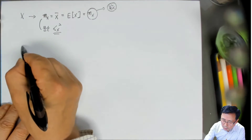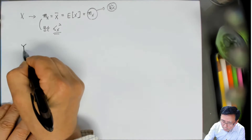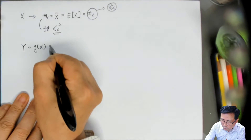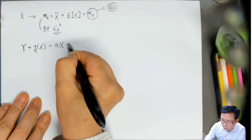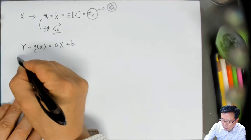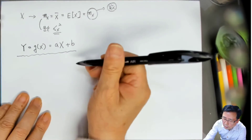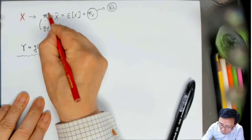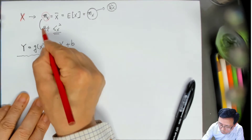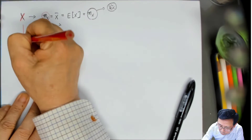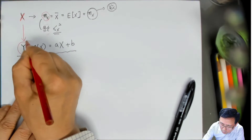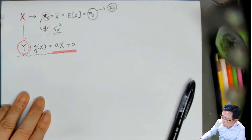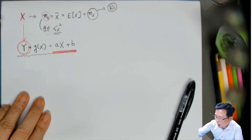그 다음에 이 random variable x의 함수 y를 g(x)라고 한다고 했죠. 이것을 ax + b라고 하자. 원래의 것은 random variable x에 대한 평균값과 분산값을 알고 있는데, 이 x의 함수인 random variable y, 즉 ax + b로 주어진 것에 대한 평균값과 분산을 구하라는 얘기입니다.